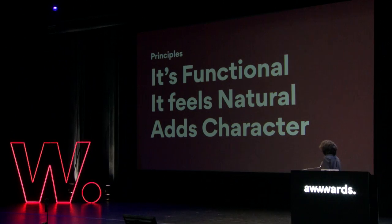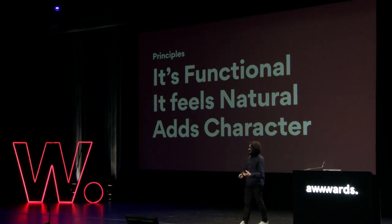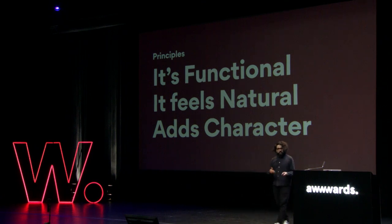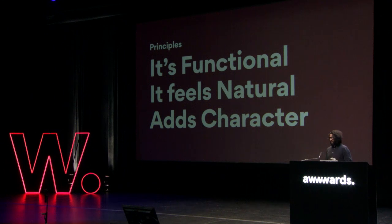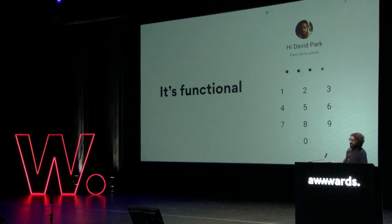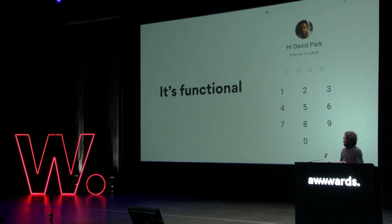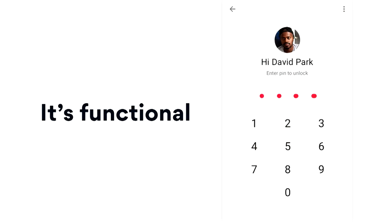Some principles I put together — probably your team and company will create their own — but I think this is a good way to start. Above all, animation starts by being functional, it feels natural, and it can add a little bit of character. Some people say delight. Being functional means it shows hierarchy between elements and the actions available — what is happening and what will happen if an action is taken. It gives you visual feedback.